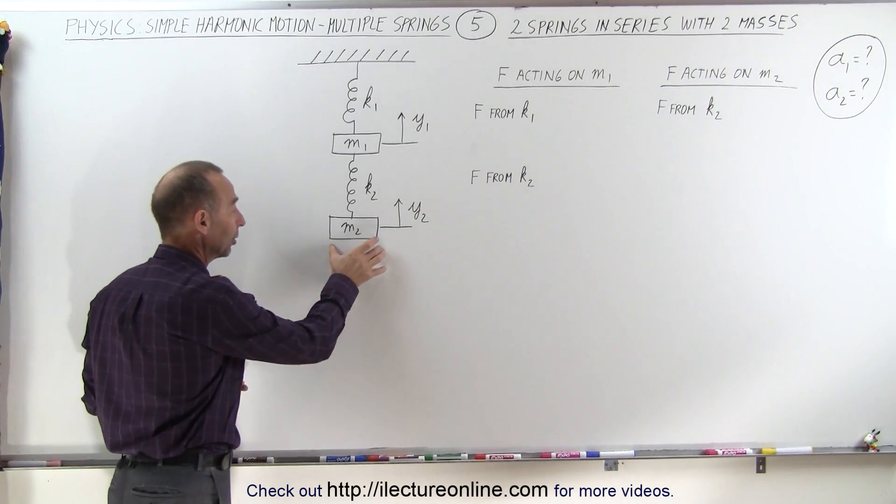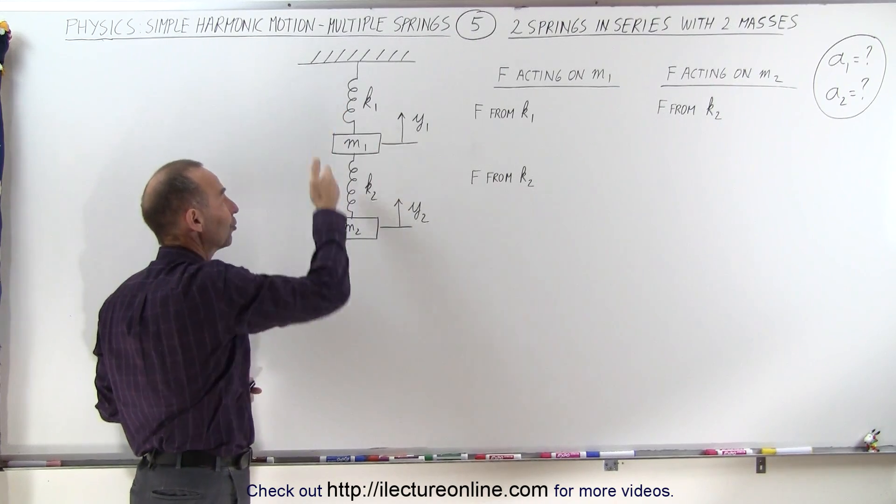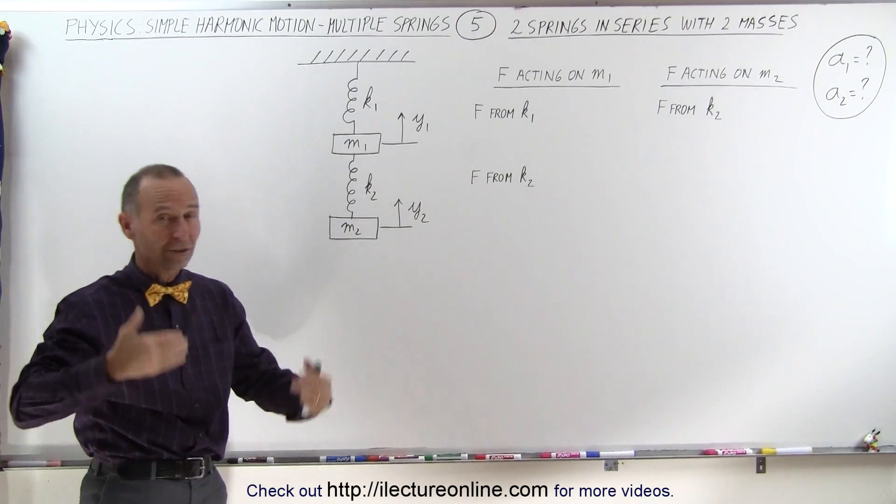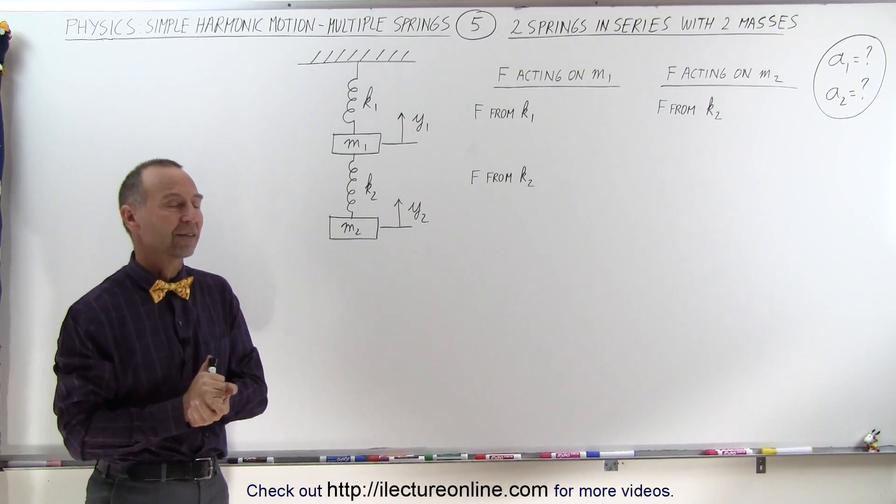How do we find the acceleration of each of the two masses like this? Obviously you can see how by pulling on one mass, that will affect the other mass as well. And of course the two springs have different spring constants, so they're going to be acting differently on the two masses. How do we figure out the acceleration of these two masses?